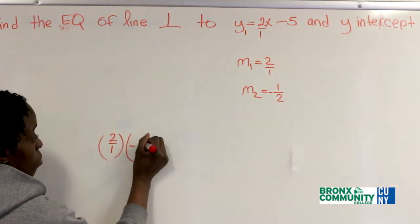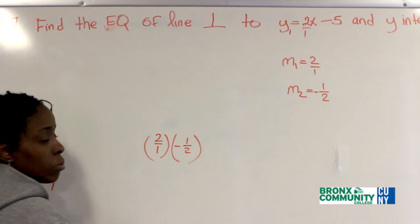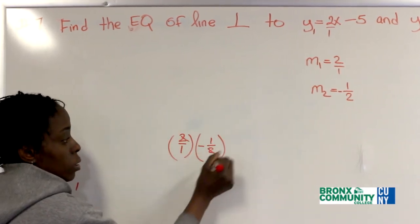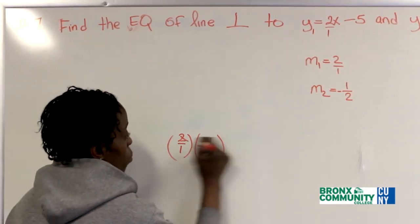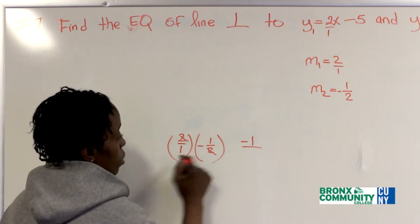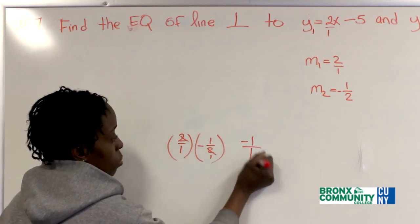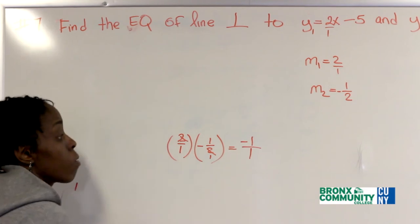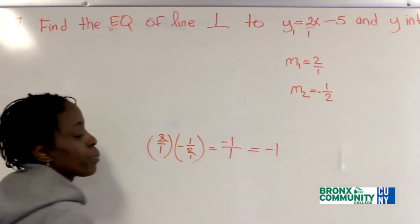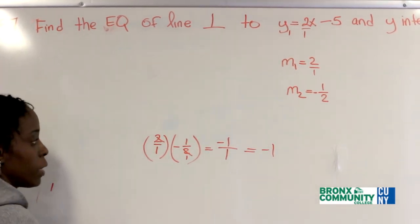And negative 1 over 2 cancels, right? So 1 times 1 is, 1 times negative 1 is negative 1, and 1 times 1 is 1. What's that? Negative 1. They're always supposed to come out to be negative 1.